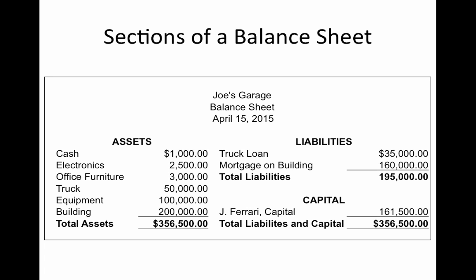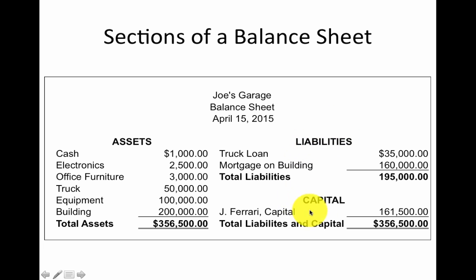You will see that we have four main sections of a balance sheet: we have a heading, an asset section, a liability section, and a capital section. These words don't probably mean a lot to you right now, but as we go through this screencast, they'll start to make a lot more sense.